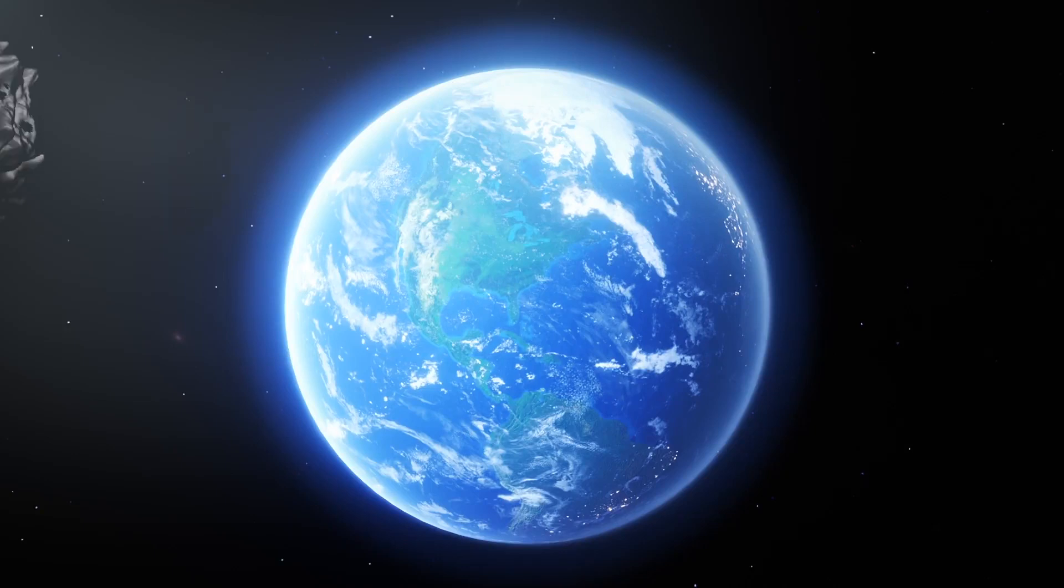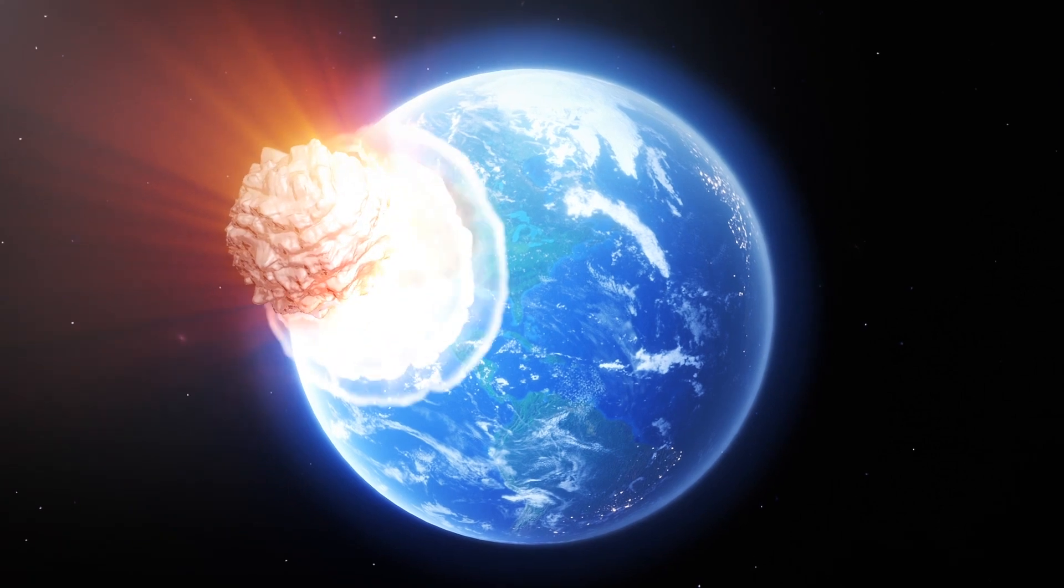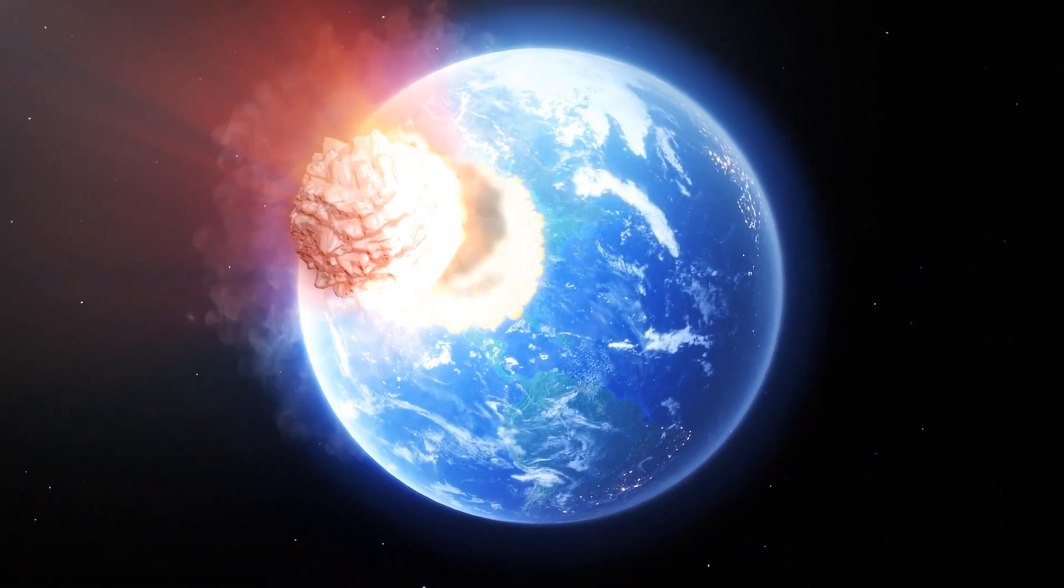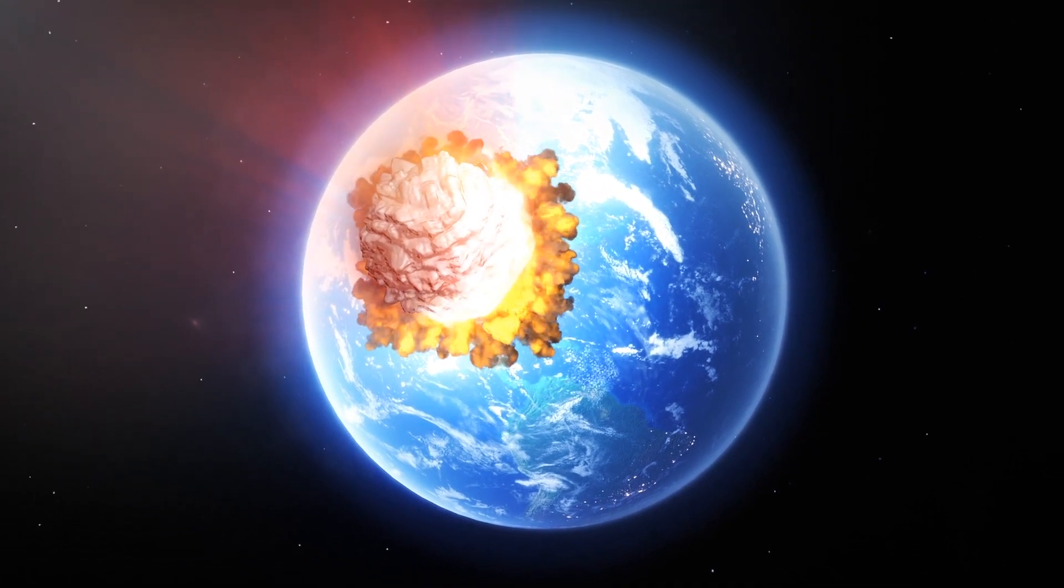If an Earth-bound asteroid was seen with only six months' warning, a group of scientists from NASA and other space agencies has concluded that no one could do anything to stop it hitting the planet, according to Business Insider.